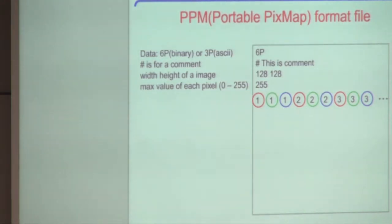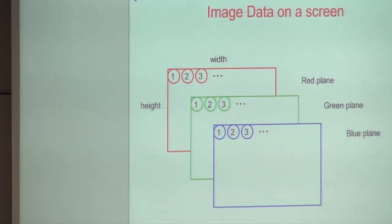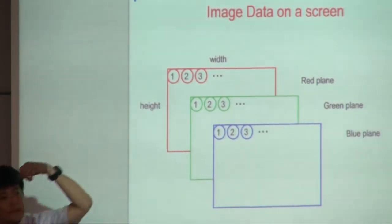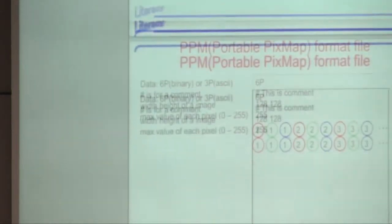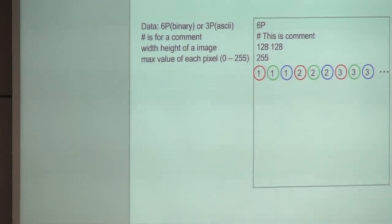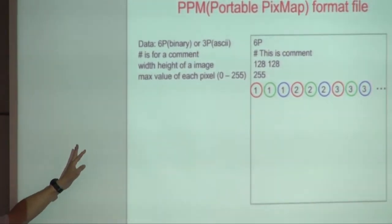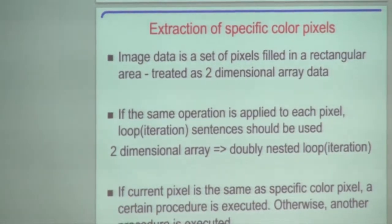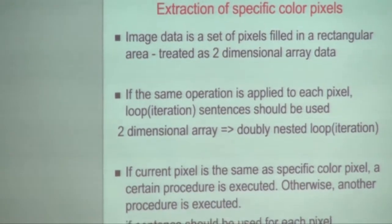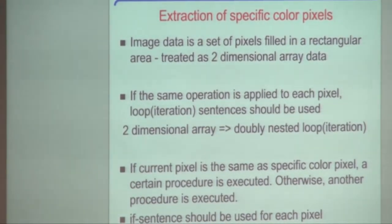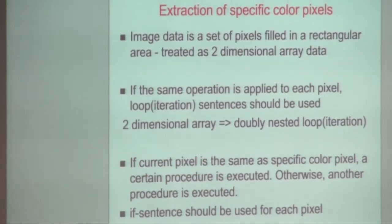The pixel layout goes: first pixel, second pixel, third pixel, and so on. As explained, the program extracts the red color pixels and changes them to black; other colors are changed to white.